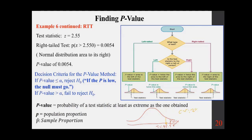Going back to the critical value: Z = 1.645, alpha = 0.05. The test statistic 2.55 is in the rejection region, so reject H₀ — consistent with the P-value method. Finally, don't mix up P-value with P itself (the population proportion) or P̂ (the sample proportion).